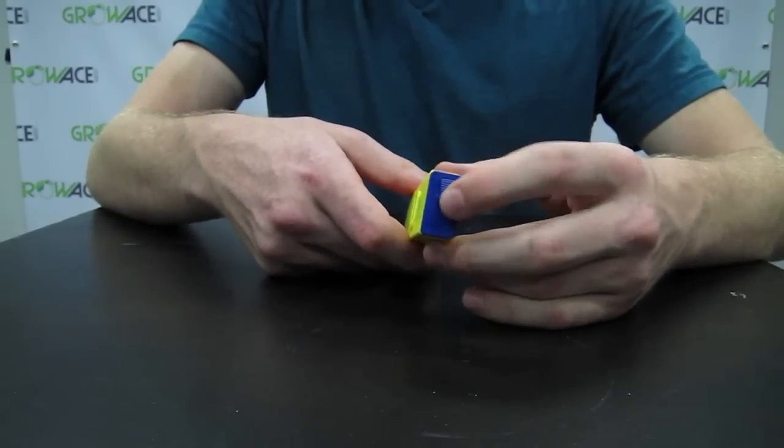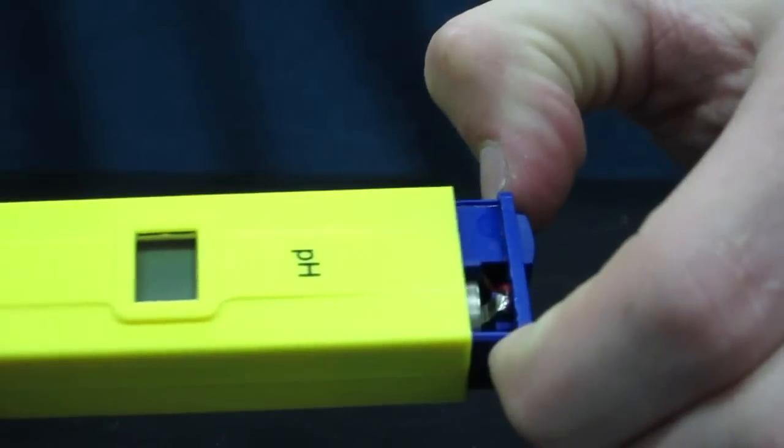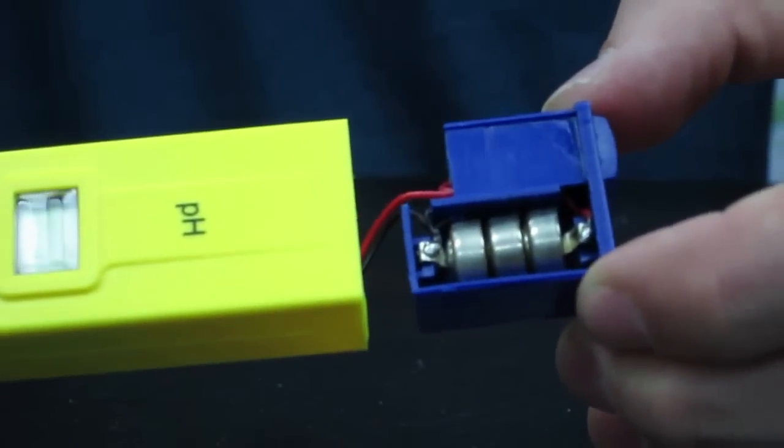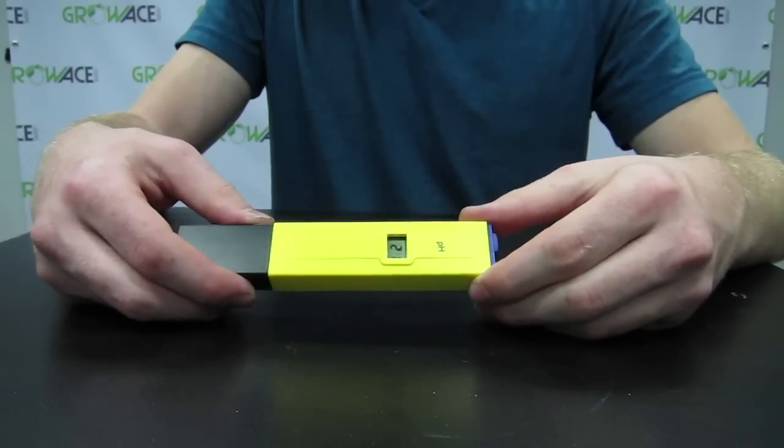A quick anatomy of these pH meters. From the top is your on and off button. You can pop the top off to expose the batteries. These pH meters take three 1.5 volt batteries and that's enough to last you 700 hours of use.